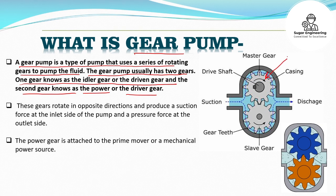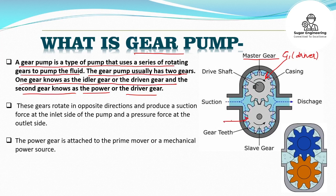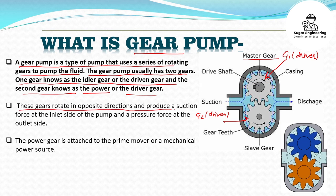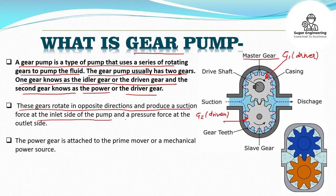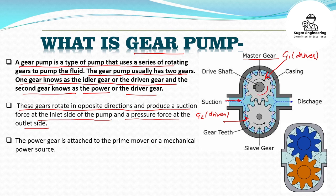As we can see in this diagram, this is gear number 1 and this is the driver gear, also known as the master gear. This is gear number 2 and this is the driven gear. This gear rotates in the opposite direction and produces a suction force at the inlet side of the pump and a pressure force at the outlet side. This means if the flow of fluid is in this direction, the gears will rotate in the opposite direction of this flow.